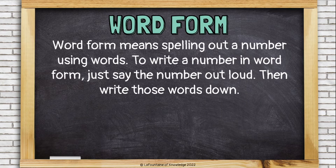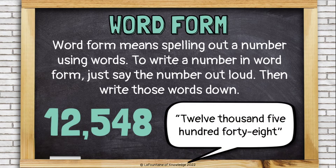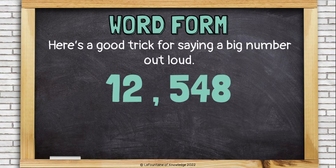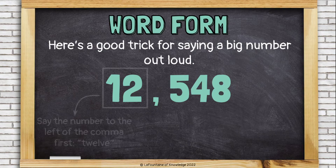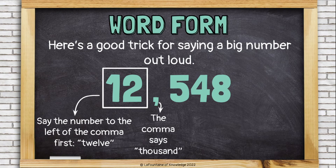Word form means spelling out a number using words. To write a number in word form, just say the number out loud and then write those words down. Here's a good trick for saying a big number out loud: say the number to the left of the comma first — 12. The comma says 'thousand.'